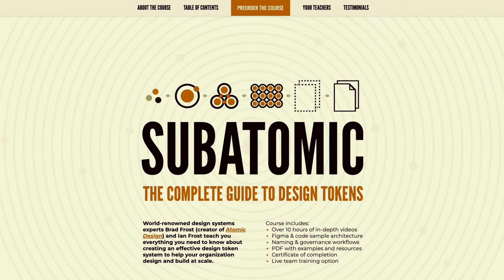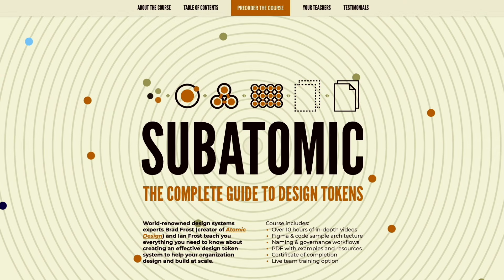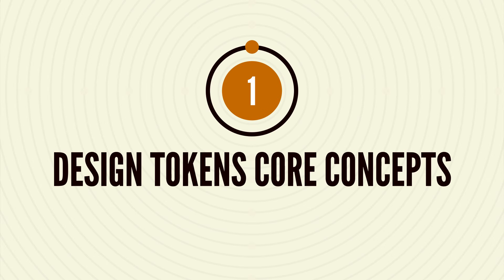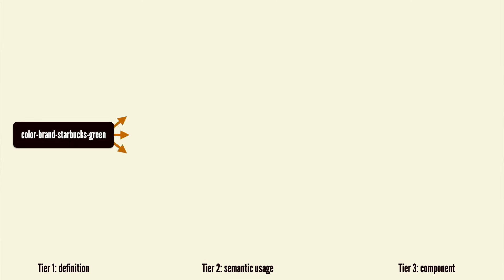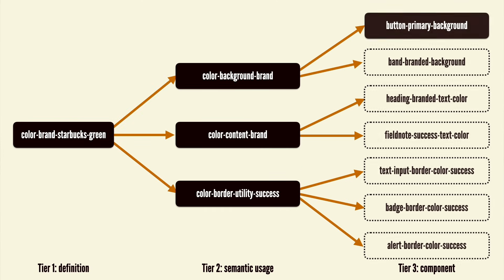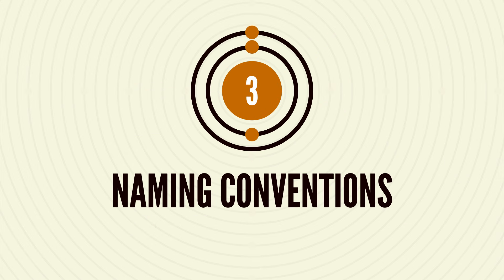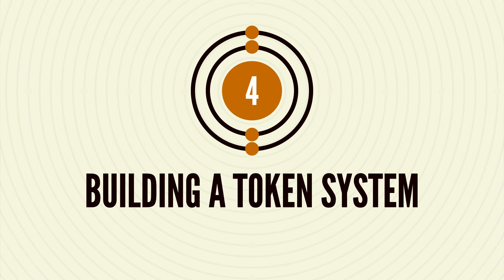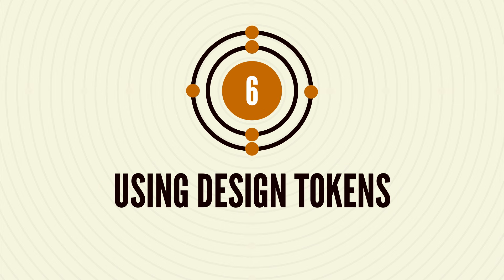We've spent an unhealthy amount of our time on Earth pondering, implementing, and arguing about design tokens. We're here to spare you the pain and agony of figuring all of this out on your own. Our new video course features eight chapters of in-depth content covering Design Tokens Core Concepts, where we'll introduce a three-tiered system for token definitions, semantic usage, and component-specific use cases. We'll talk about foundations and architecture, the dark art of naming conventions, building, publishing, and adopting a token system.